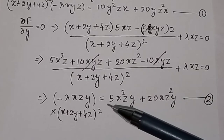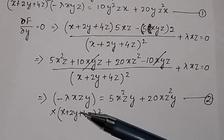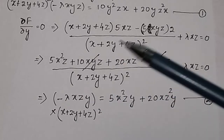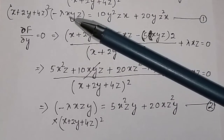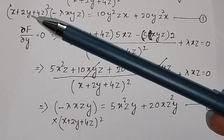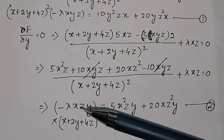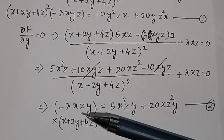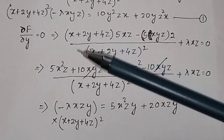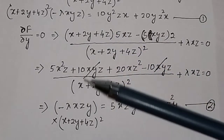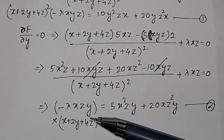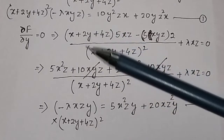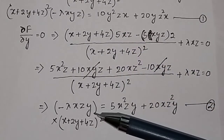The reason for multiplying x and y on both sides is to make the left-hand side of all equations the same. To have the same expression on the left-hand side of each equation, x was multiplied in equation 1 and y was multiplied in equation 2.